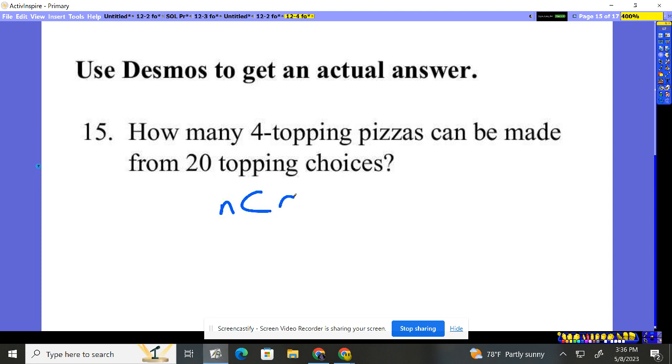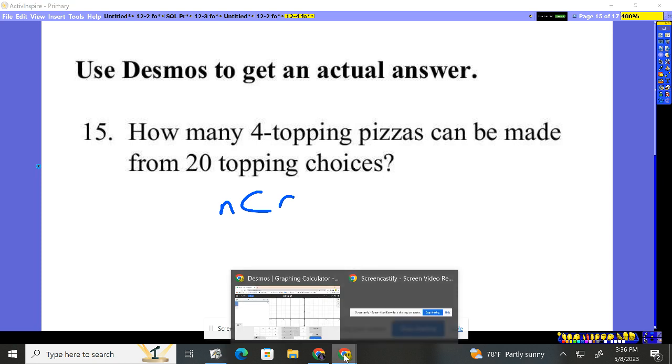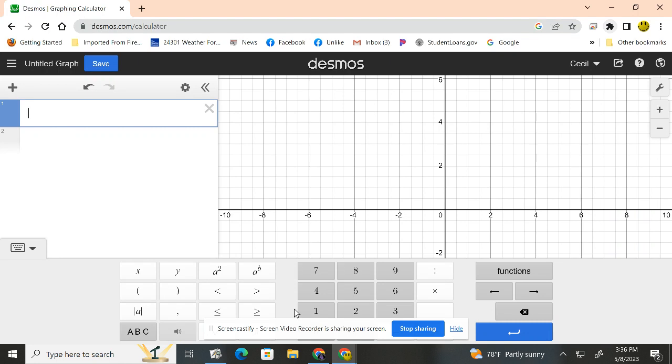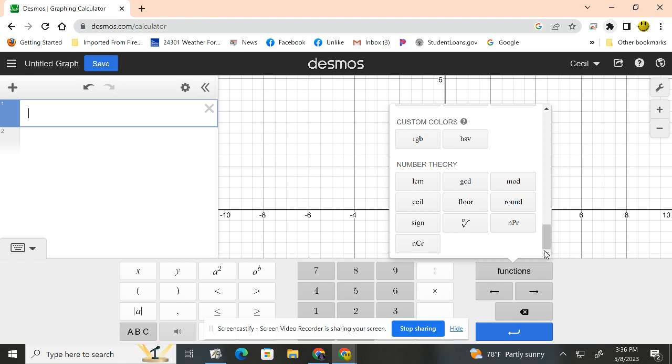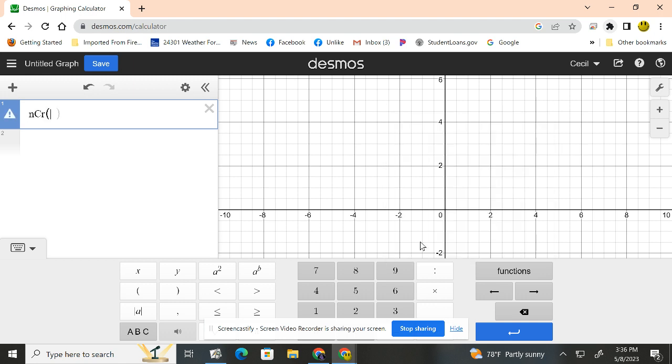Okay, so we're going to use the NCR button. We can do it on a calculator or we can come, as it says here, let's go to Desmos and we need to pull that, hit the functions button, go all the way down, and do the NCR for me.